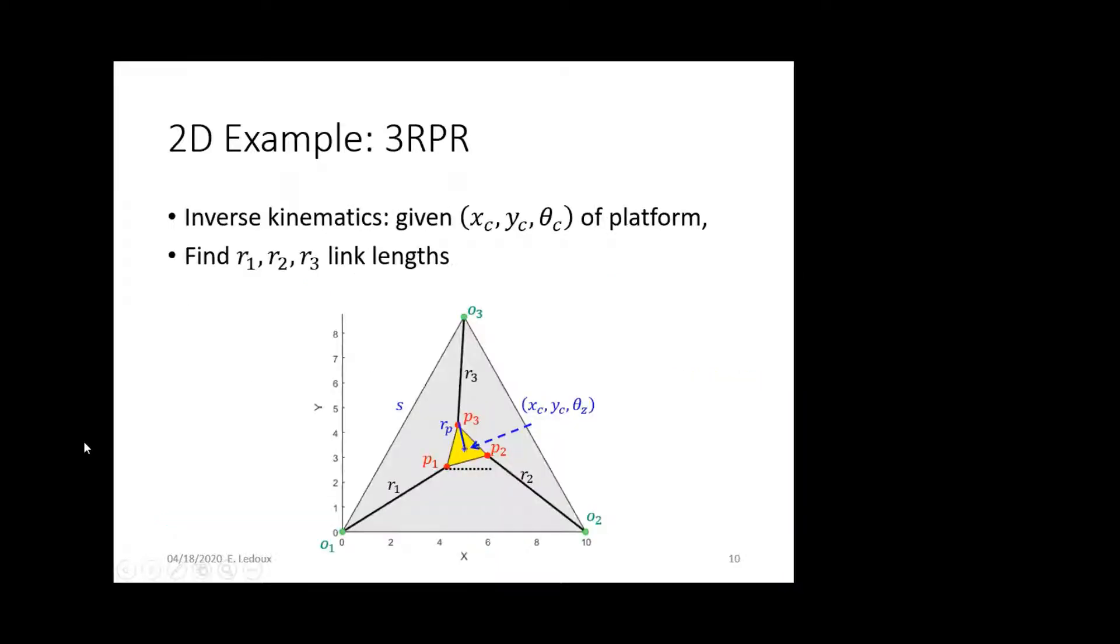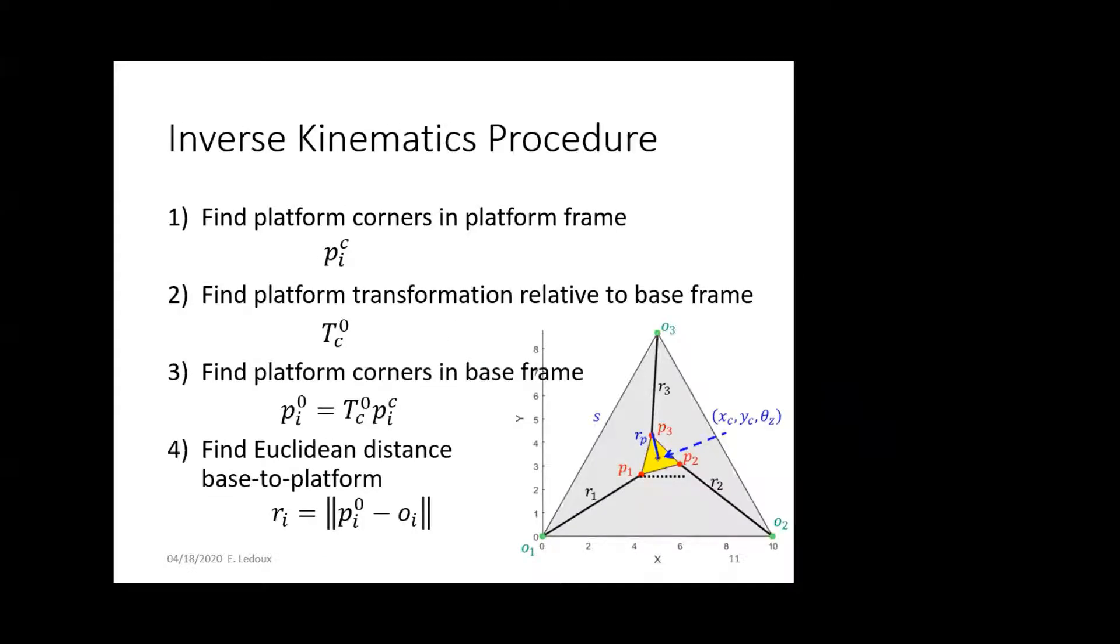So we'll look at that. In inverse kinematics, if we're given the pose of the platform, we know the X and Y component and the yaw that we need it to be at. Find what each of these leg lengths are. So, the procedure.